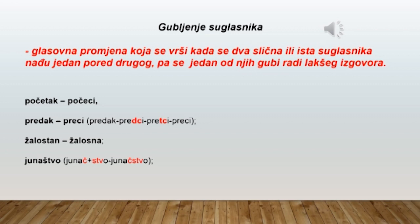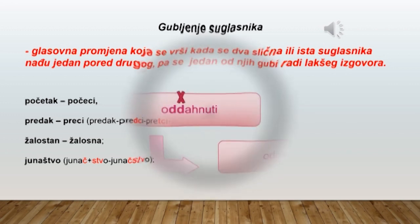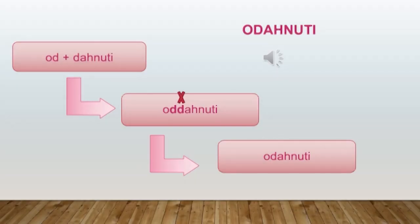U imenici junaštvo suglasnik Č se uprošćava gubljenjem praskavog dijela artikulacije pa dobijamo suglasnik Š. Tako od junaštvo dobijamo junaštvo. Evo kako je nastao glagol odahnuti – od prefiksa od plus glagola dahnuti. Kada se to spoji dobijamo udvojeni suglasnik D koji se po zakonu ove glasovne promjene gubi i dobijamo odahnuti.